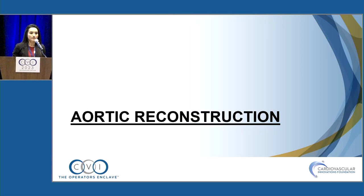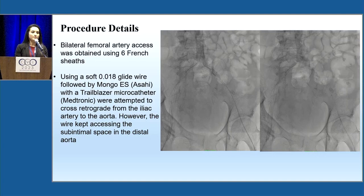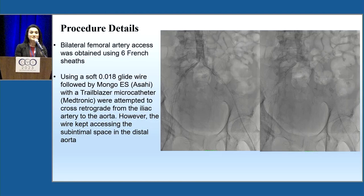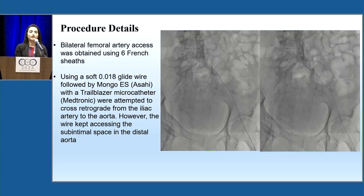We decided to proceed with aortic reconstruction. We obtained bilateral femoral access using 6 French sheaths and tried to cross with a 0.018 wire, but it was unsuccessful. We tried a Sahih wire with a Trailblazer microcatheter, but we were entering the subintimal space. We then obtained a third access via the brachial artery — the radials were very small and calcified — and confirmed with angiogram that all wires were in the subintimal space and the distal abdominal aorta was occluded.